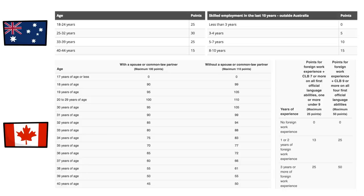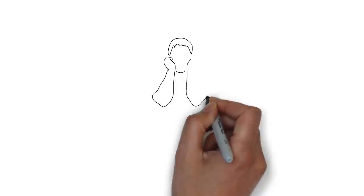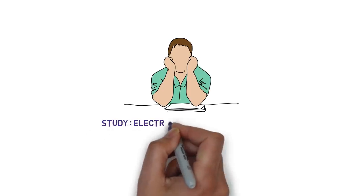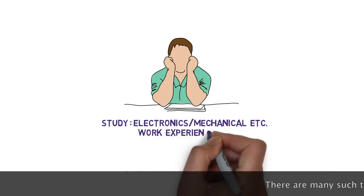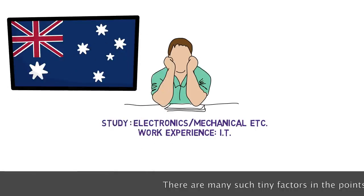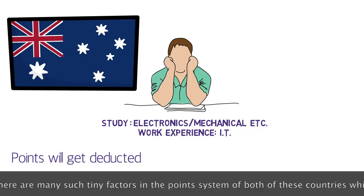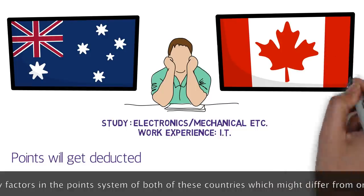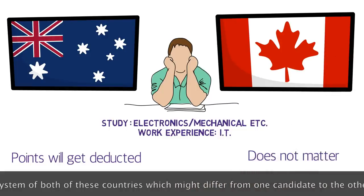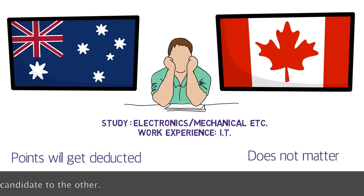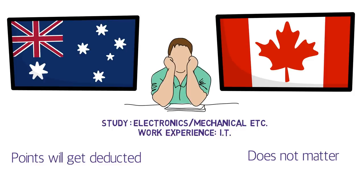Another key point in the eligibility phase: if you studied in electronics, mechanical, biotechnical, or another stream but are working in IT, your points will be deducted in Australia, but it doesn't matter in Canada. So Canada has an upper hand here. Ultimately, eligibility is application-specific and differs from person to person — first determine if you're eligible for one or both countries.